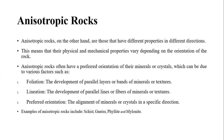Foliation, as mentioned in lecture two of structural geology, is the development of parallel layers or bands of minerals or textures seen in the rock. Lineation is the development of parallel lines or fibers of minerals or textures. Preferred orientation means the alignment of minerals or crystals in a specific direction depending on the principal stress. Examples of anisotropic rocks include schist, gneiss, phyllite, and mylonite — these rocks have preferred orientations, lineations, and foliations.